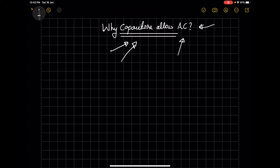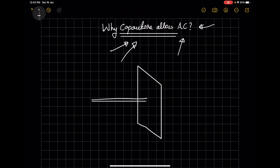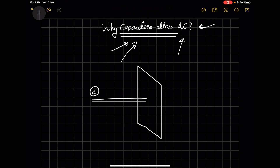If you already know how capacitors behave with DC and how to visualize AC signals, you can continue with this video. Let's take only one plate of the capacitor. This is one plate of the capacitor and a wire goes to it. In an AC signal, electrons move towards the capacitor plate, sit on the capacitor for some time, and then come back in the same direction — they keep doing this repeatedly.